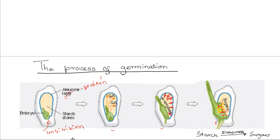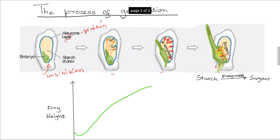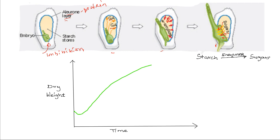As this growth takes place, if the dry weight of the germinating seed is plotted over time, there will be an initial decrease in the dry mass of the developing plant. This initial decrease is brought about by hydrolysis of food reserves — mainly the starch in storage centers such as the endosperm — and by the oxidation of sugars, which produces carbon dioxide and water.